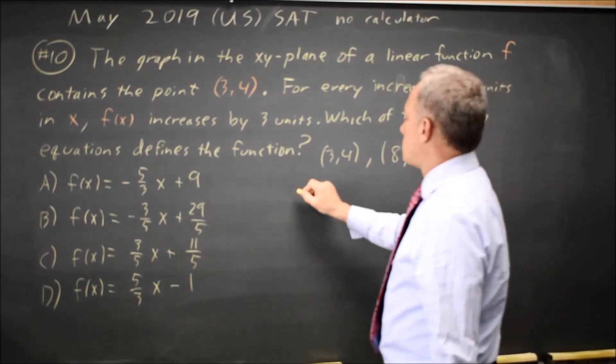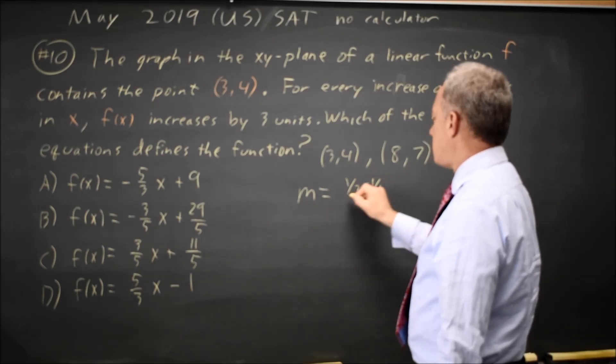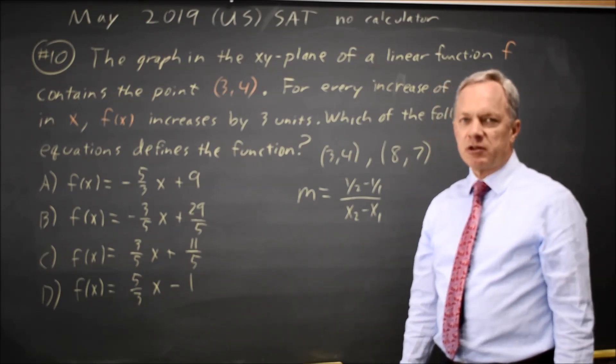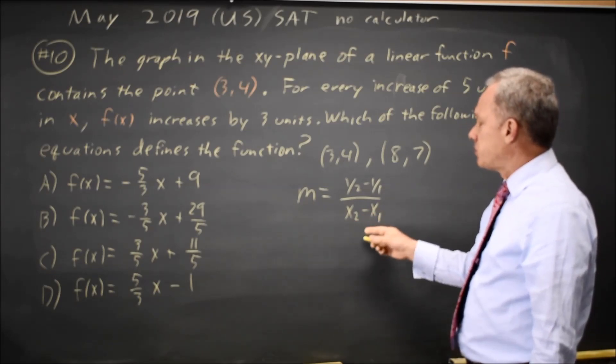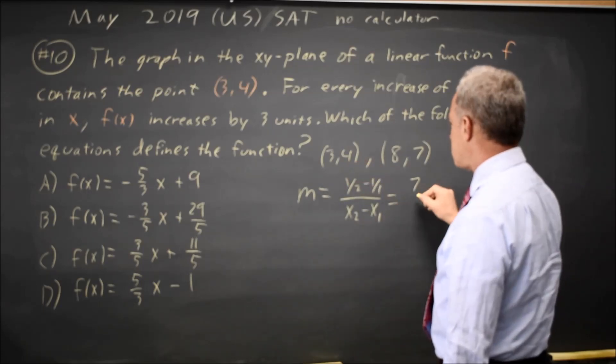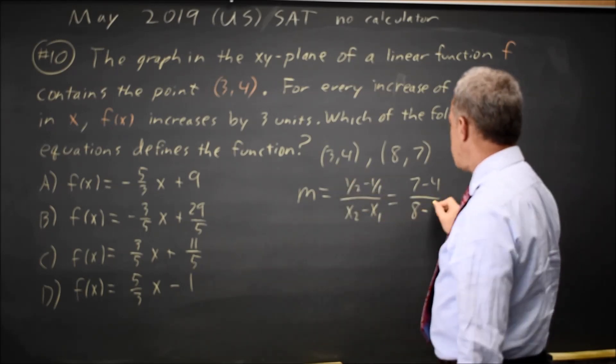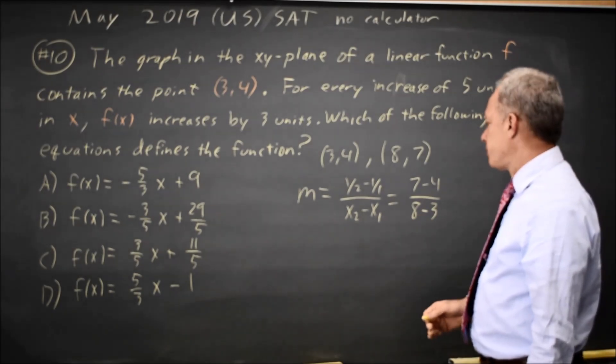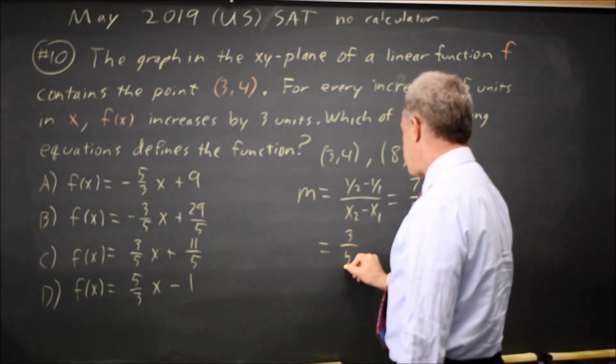So our slope is the change in y, y2 minus y1, over the change in x, x2 minus x1. I prefer to actually write this out so that I don't flip it and put the x's on top by mistake, and so I don't inadvertently swap just the x or just the y. So my y2 is 7, y1 is 4, x2 is 8, x1 is 3, and my y's are on top, x's are on the bottom, and I haven't swapped the order. So the slope of my line is 7 minus 4 is 3, over 8 minus 3 is 5.